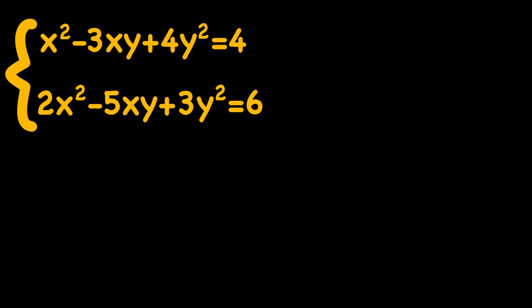But before we do that, let's go ahead and talk about the smart trick. Let's discuss ax squared plus bxy plus cy squared equals 0, and how to solve this to find a relation between x and y.